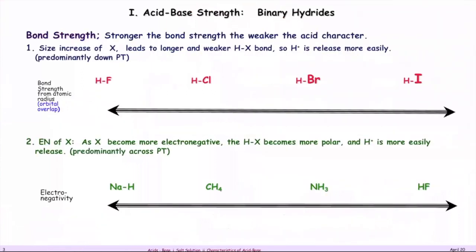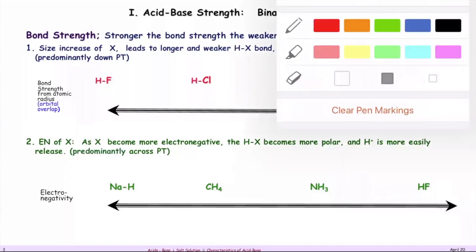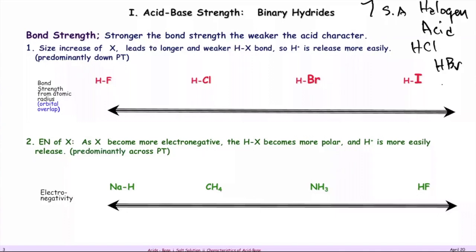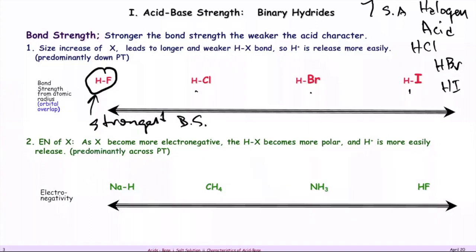There are seven strong acids, and among them are the halogenated acids. These are HCl, HBr, and HI. HF is not a strong acid even though it's in the same halogen family. The reason comes down to bond strength — HF has the strongest bond strength, while HI has the weakest bond strength among the halides.